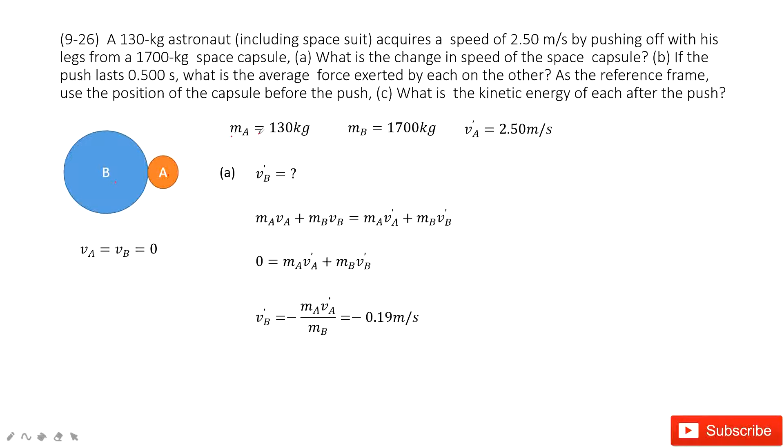The mass A is given, mass B is given, and initially these two objects are stationary. So initial velocity is zero, and final velocity for A is given 2.5 meters per second.